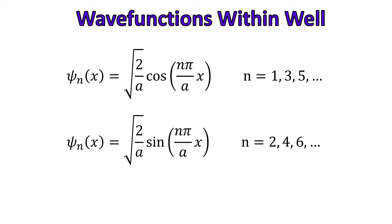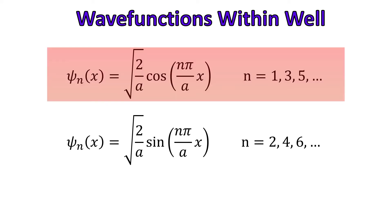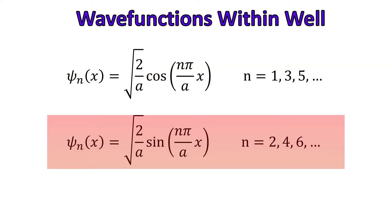Also by normalizing the probability density function. These calculations aren't so difficult to do but I will not show them here because that isn't the intention of this video. The results of the possible wave functions inside the box are: ψ(x) = √(2/a)·cos(nπx/a), where n is an odd number, or ψ(x) = √(2/a)·sin(nπx/a), where n is an even number.